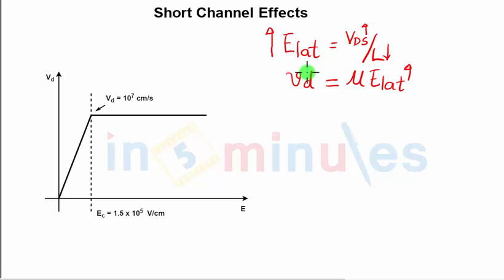What we see on the graph here is that the drift velocity increases linearly until it reaches E-critical, which is 1.5 × 10^5 volts per centimeter. After this point, the drift velocity saturates at 10^7 centimeters per second. Now why does this happen and what exactly is occurring here? Let's understand this in more detail.